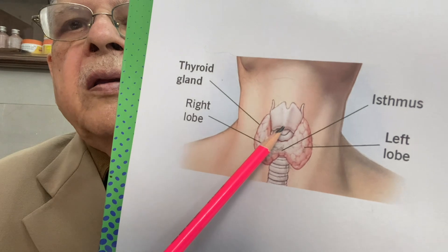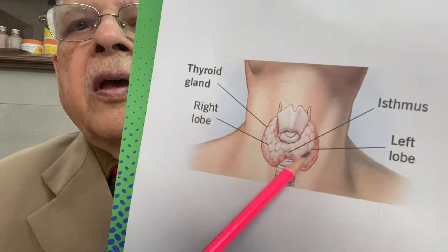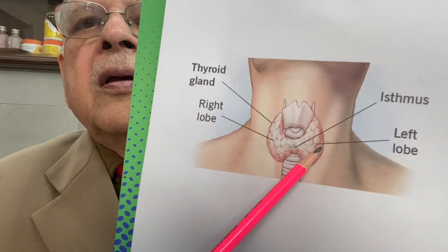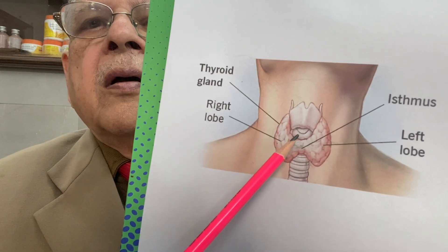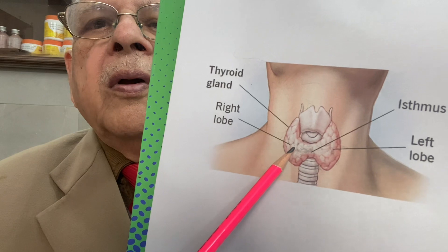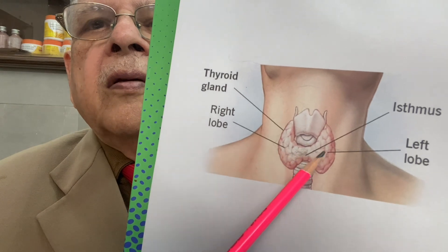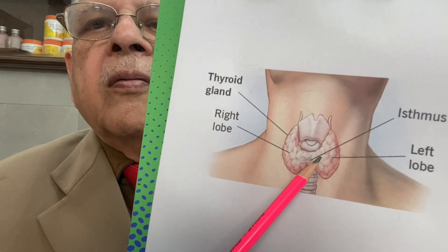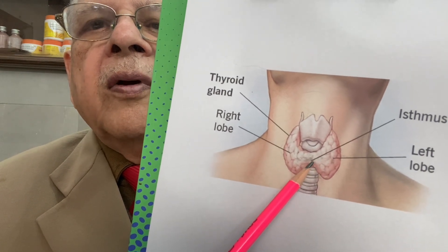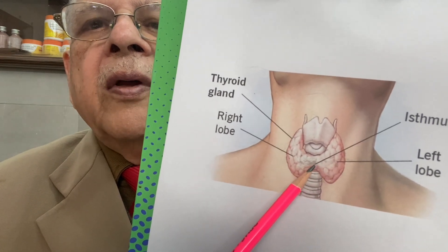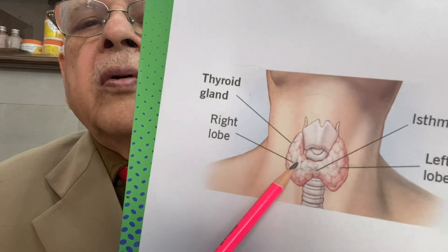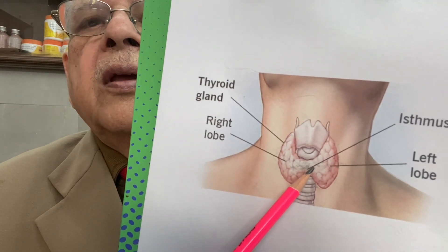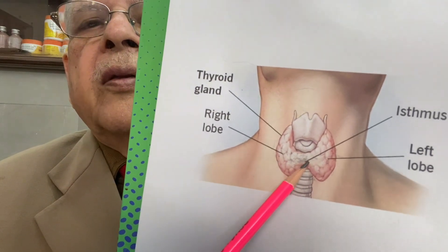This is the thyroid cartilage, this is the thyroid gland. This is the right lobe and this is the left lobe, and a small band of thyroid tissue connects these two lobes — this is called the isthmus of the gland.